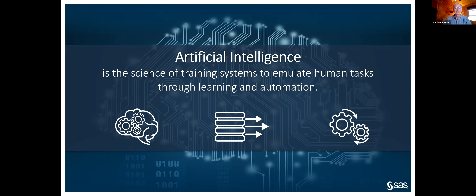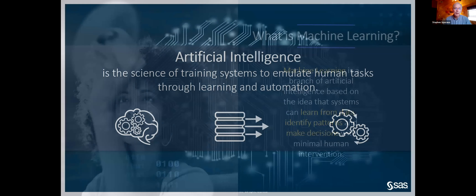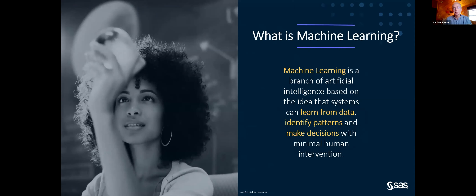Machine learning is essentially a branch of AI — an umbrella term. Machine learning is about learning from data, looking for patterns, and driving action by making decisions with minimal human intervention. One key differentiator between machine learning and deep learning: machine learning requires structured data. For example, if you're looking at photos of dogs and cats, you tag which are dogs and which are cats, and from that tagged data the system can learn and build better models.